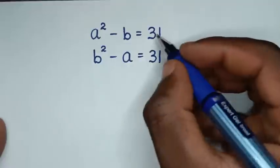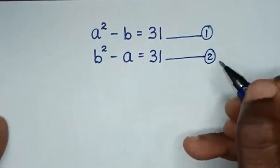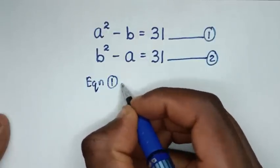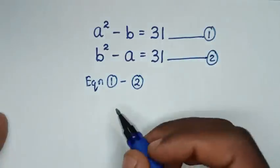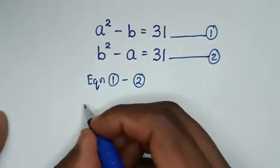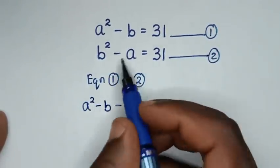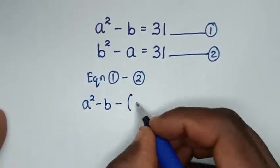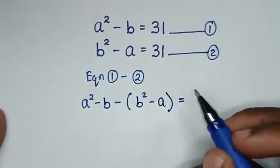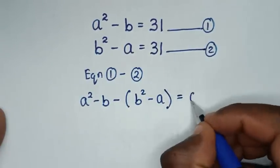Let's label these as equation 1 and equation 2. In the first step, we'll take equation 1 minus equation 2. From equation 1, the left side is a squared minus b, and from equation 2, the left side is b squared minus a. So it becomes a squared minus b, minus (b squared minus a), equal to 31 minus 31, which is 0.